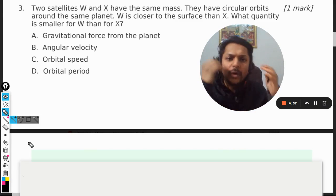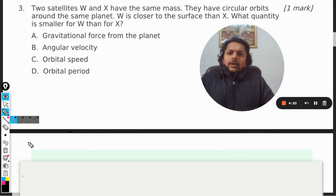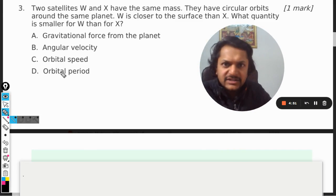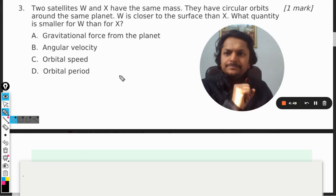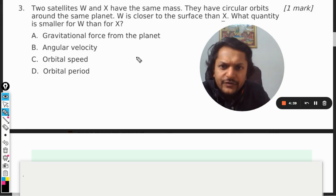Okay, let us see what is there in this question. Two satellites W and X have same mass. They have circular orbits around the same planet. W is closer to the surface than X.